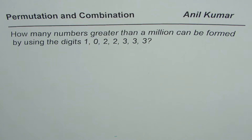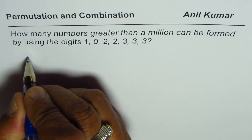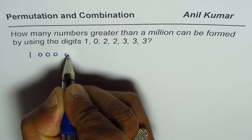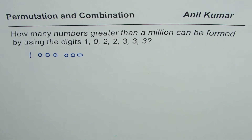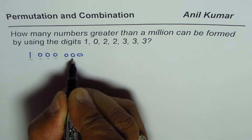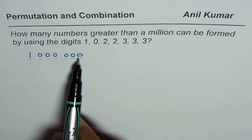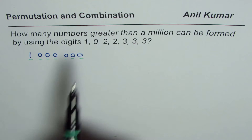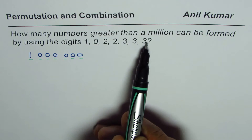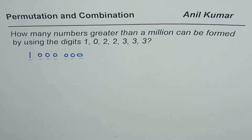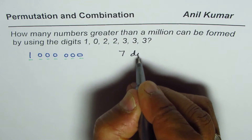I'm Anil Kumar, and now let us further explore a few more examples on permutation and combination. The question here is: how many numbers greater than 1 million can be formed by using the digits 1, 0, 2, 2, 3, 3, 3? One million means one thousand thousand, so we have seven digits in total, and all digits must be used.